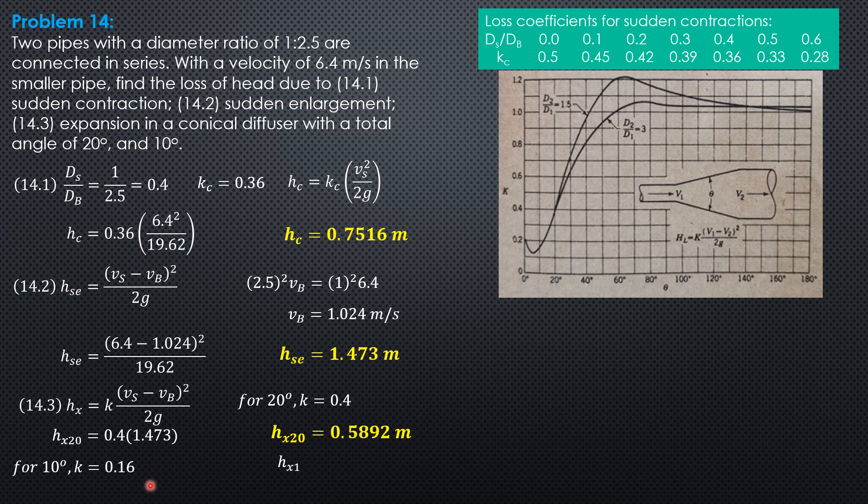Therefore, head loss due to gradual expansion, 0.16 of 1.473 equals 0.2357 meter.